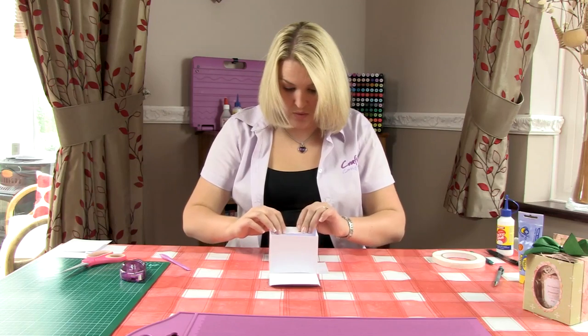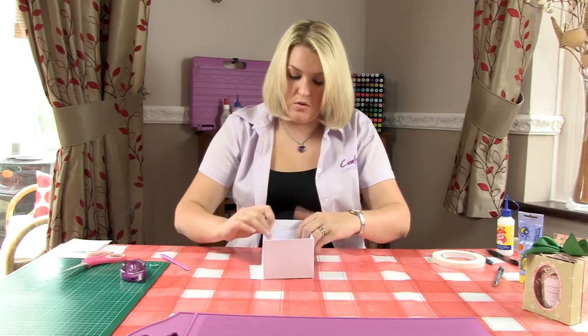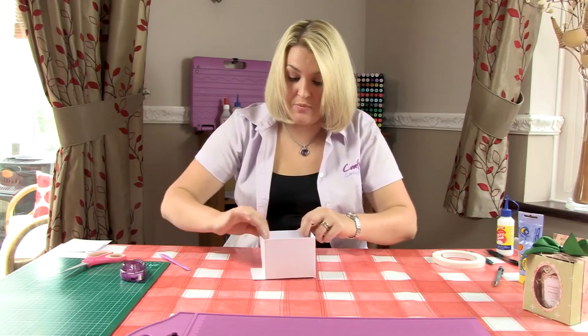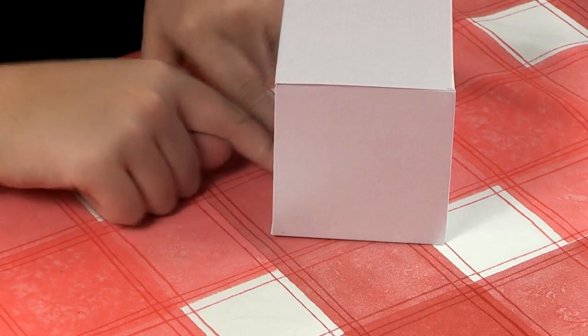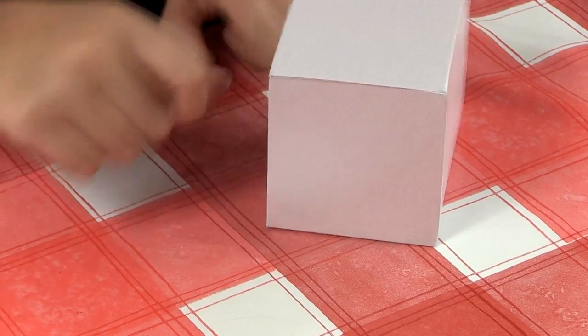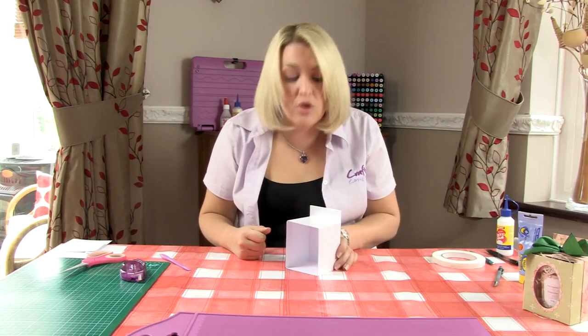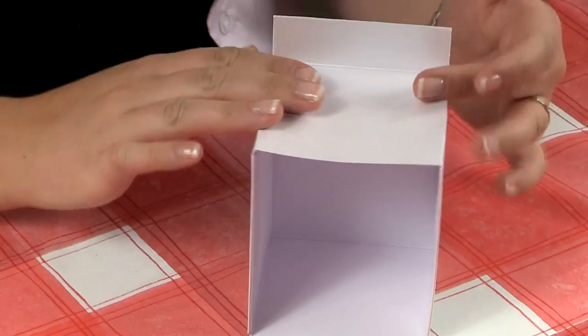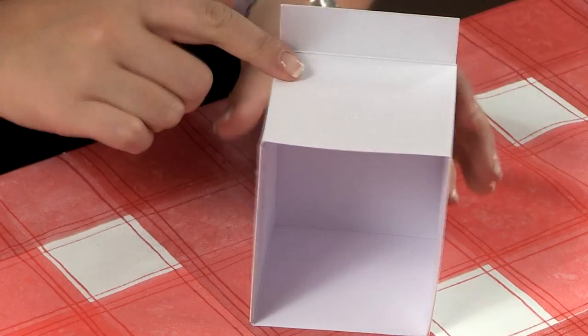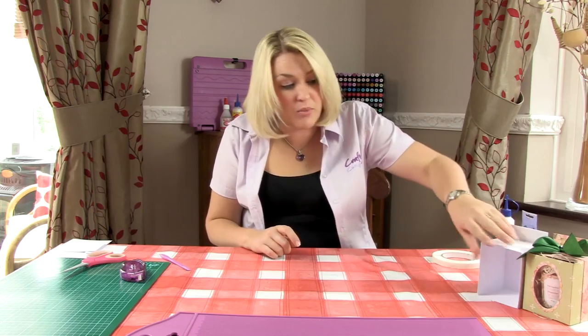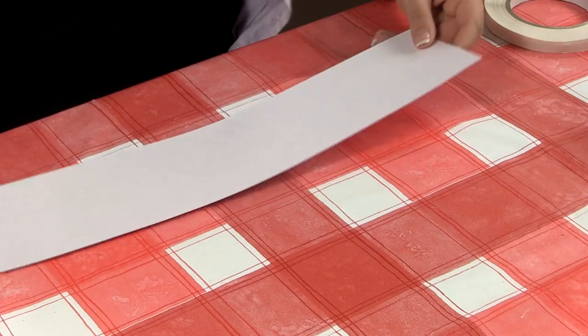It would be a lot stronger if I was to use something like our tacky glue at this point, so if you're taking your time I would definitely recommend that. This comes up, and then this wraps over to give it the strength. It's all about building strength and integrity into the construction, because when they're larger projects, even though this is larger card, unless you're working with mount board you're still not going to have matters of strength. That's the complicated part out of the way.